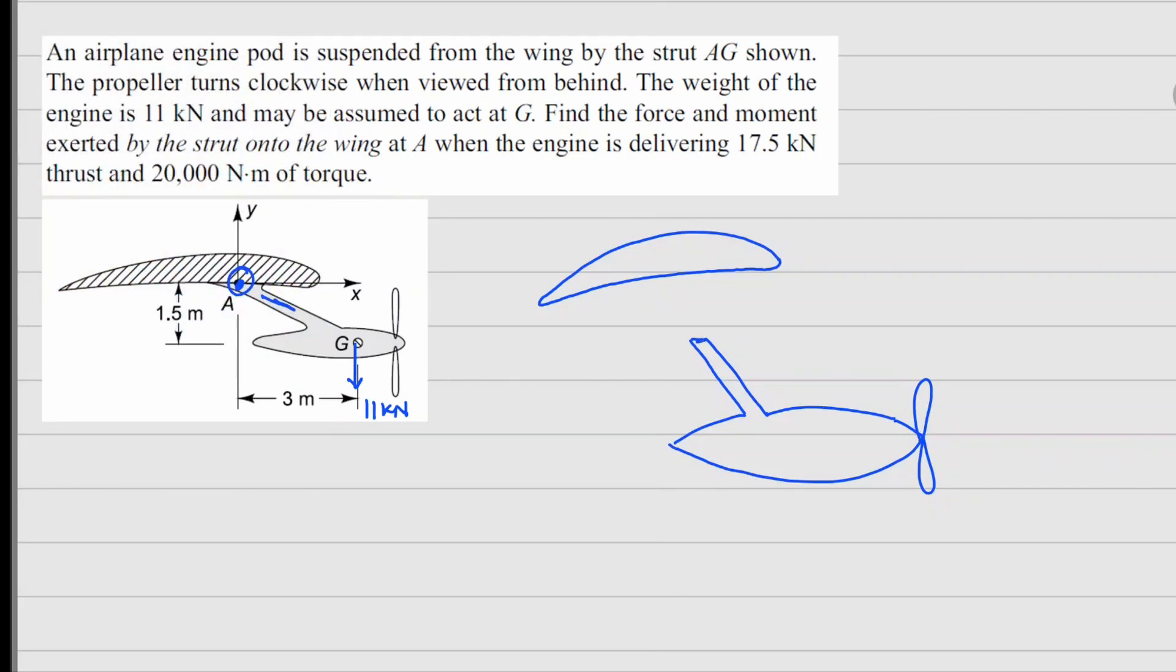Now, from Newton's third law, between these two points, if there is a force F acting here, there will be an equal and opposite force F here. Because their directions are different, I am marking this as F'. Similarly, if there is a moment M here, there will be exactly opposite moment here. Mark it M'.